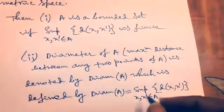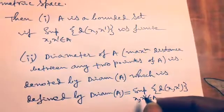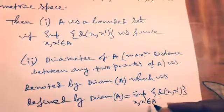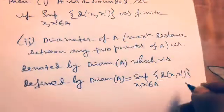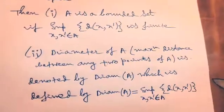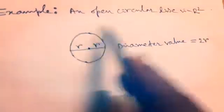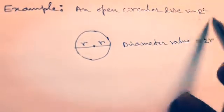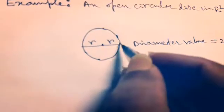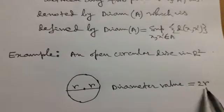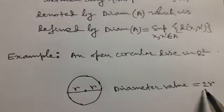And if we consider an open circular disk in R2, Euclidean space of dimension 2, in any case of circular disk, and if we consider here simply d of S of R, that is diameter value is equal to 2R. We easily found it here.